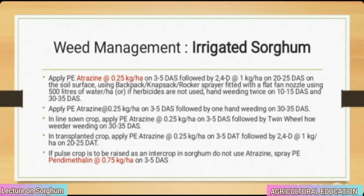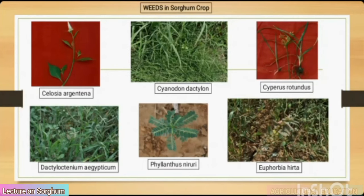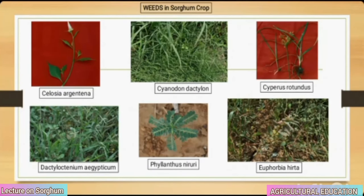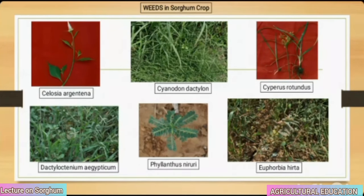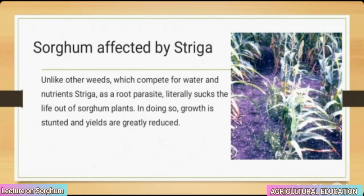Weeds in sorghum crop include Celosia argentea, Cynodon dactylon, Cyperus rotundus, Dactyloctenium aegyptium, Phyllanthus niruri, and Euphorbia hirta. Sorghum is affected by Striga — unlike other weeds which compete for water and nutrients, Striga is a root parasite that literally sucks the life out of sorghum plants. Growth is stunted and yields are greatly reduced.